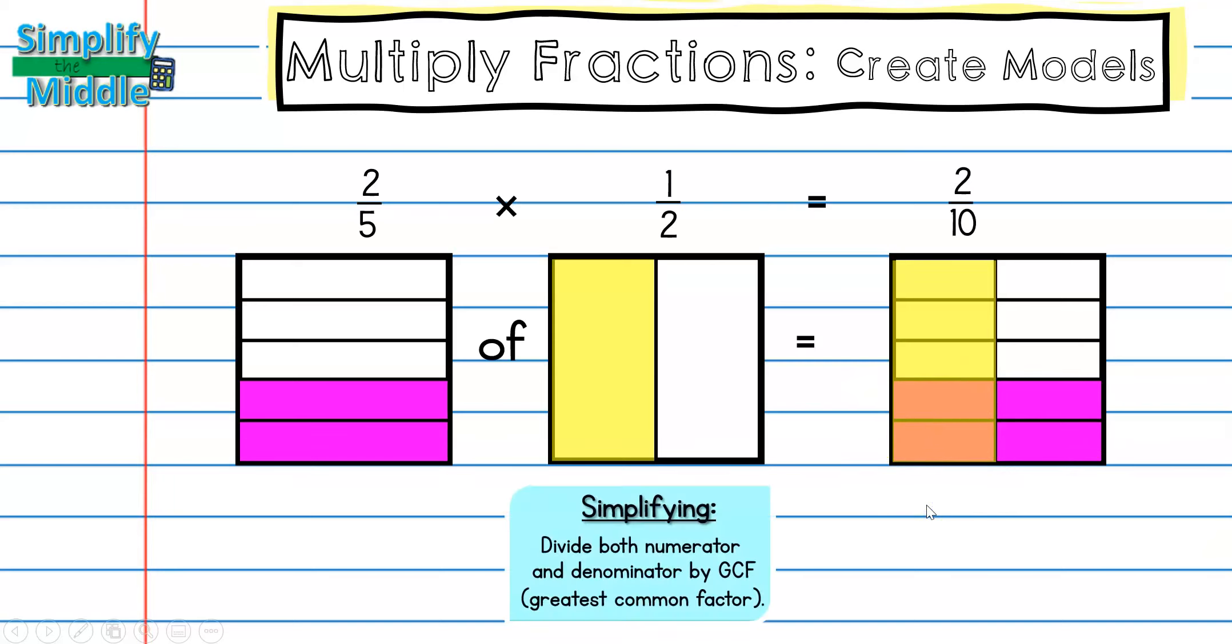And don't forget that you need to simplify any time that you have a factor in both the numerator and the denominator. So here I have a common factor, a greatest common factor of two. So I would divide two by two to get one and ten by two to get five. So one-fifth is the answer.